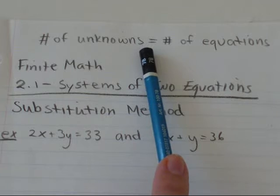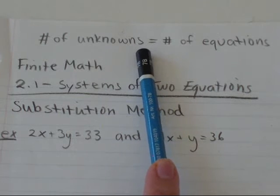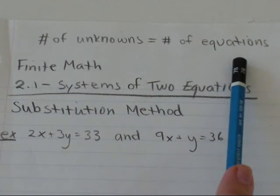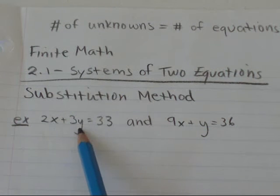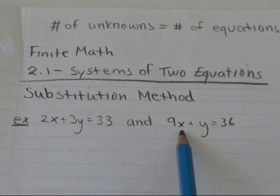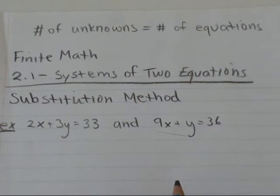The number of unknowns in your equation has to equal the number of equations you have. So here I've got two unknowns. I've got x and y, and I'm using two equations to solve the system.